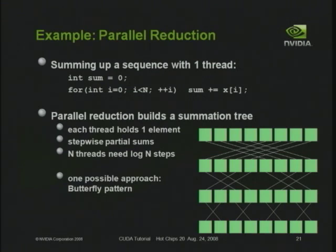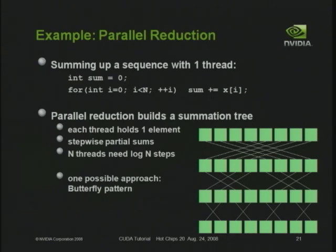A more interesting parallel computation example is parallel reduction — if I have an array of values and want to sum them all up. The sequential code is obvious: create an accumulator variable, loop over the input, sum them all up. In parallel, I can build a summation tree and perform lots of additions in parallel. I can take the input, sum every pair of elements, then sum every pair of partial sums, building the summation tree in log n steps.